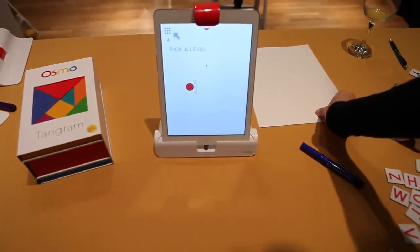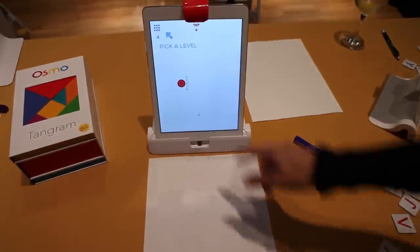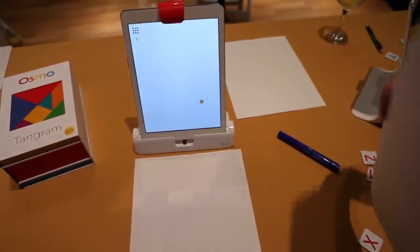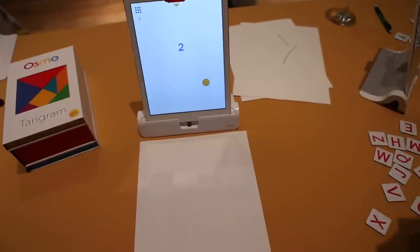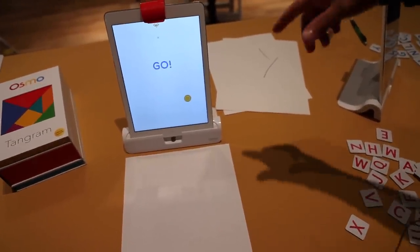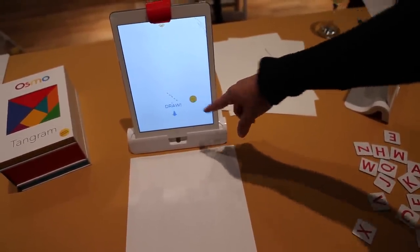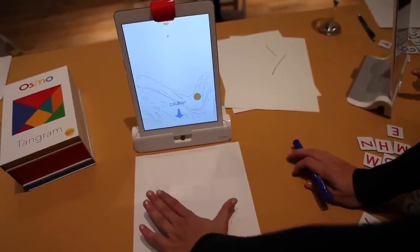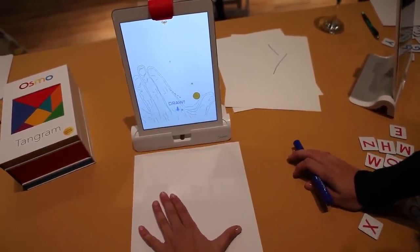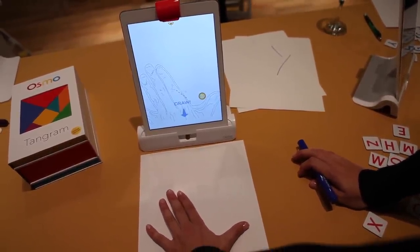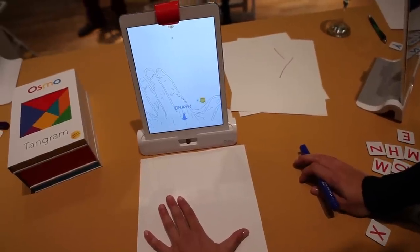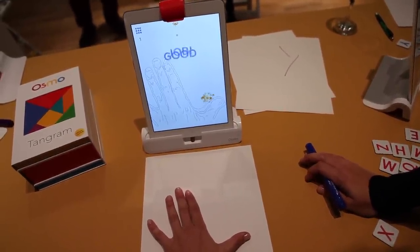So this game is called Newton and I'm going to start with the first level. The objective here is to find a way for the falling ball to hit the target here, the orange ball. And I can use a variety of things, so whatever I put in front of the iPad screen becomes an interaction in the game. So here I can take my hand, create a machine essentially.